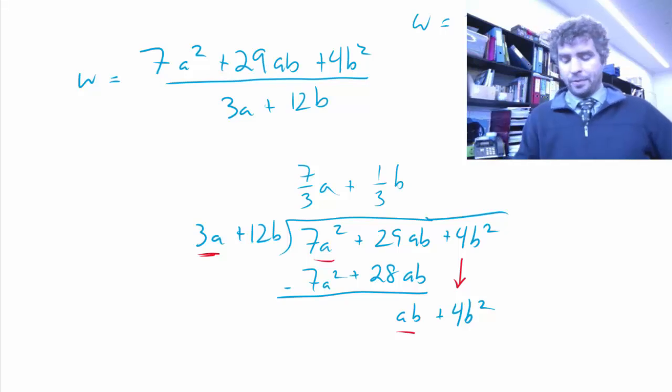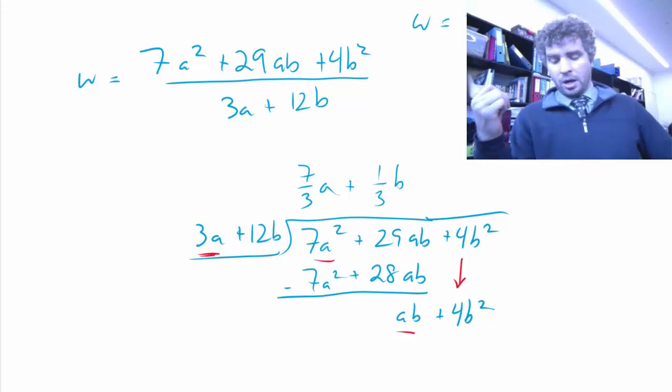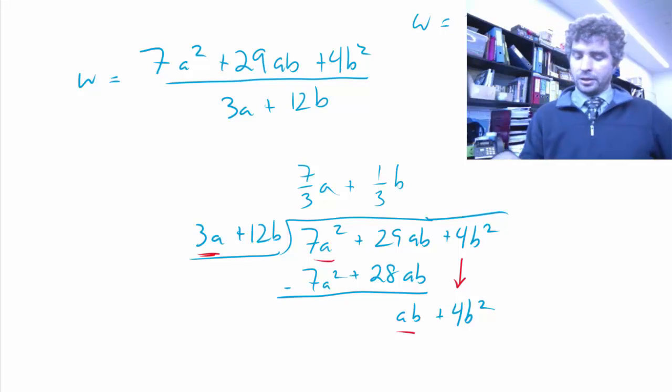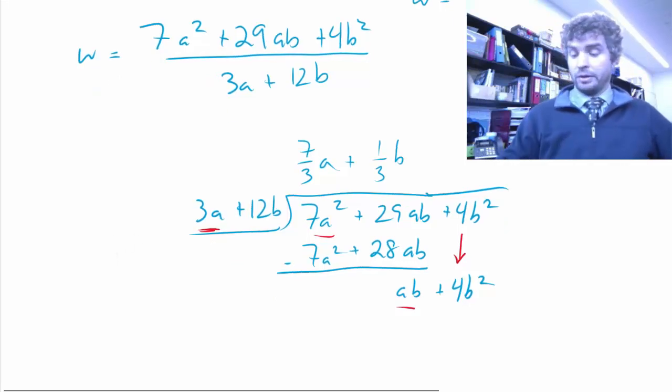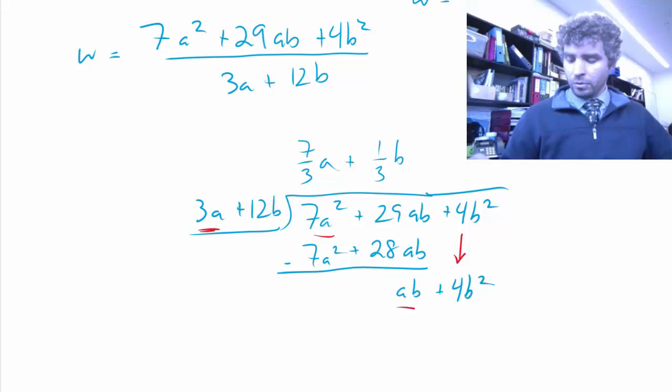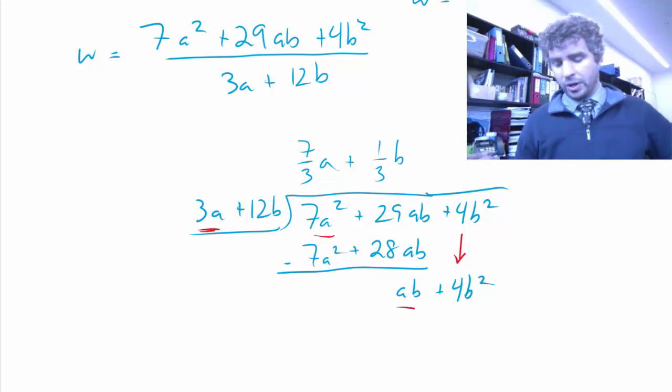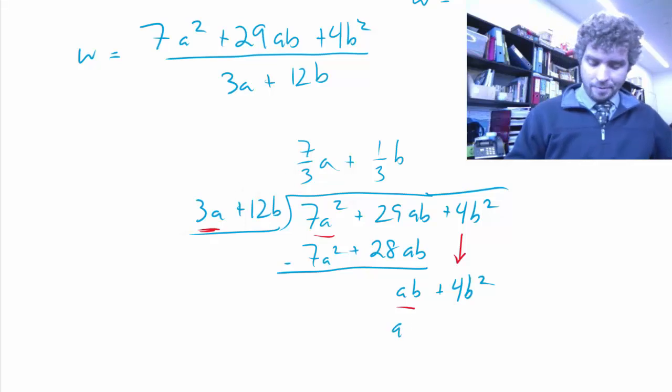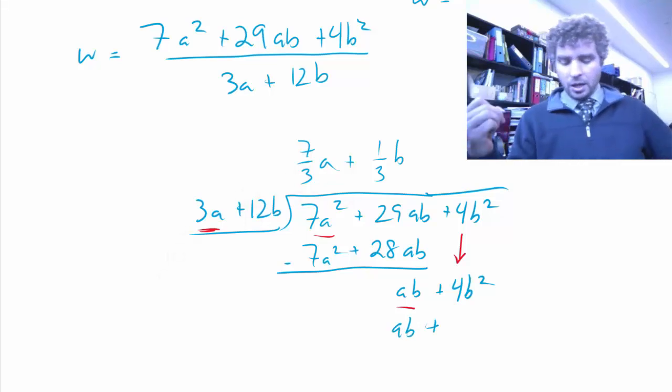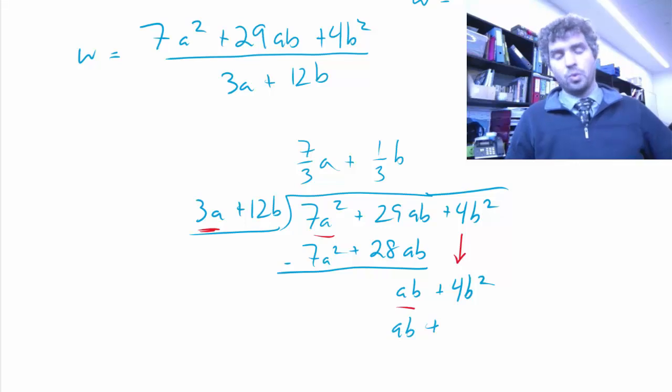Once again, I'm going to multiply that by my denominator out here and see if there's any remainder. So, 1 third b times 3a, the 3 and the 1 third cancel out, b times a is ab, which makes sense.